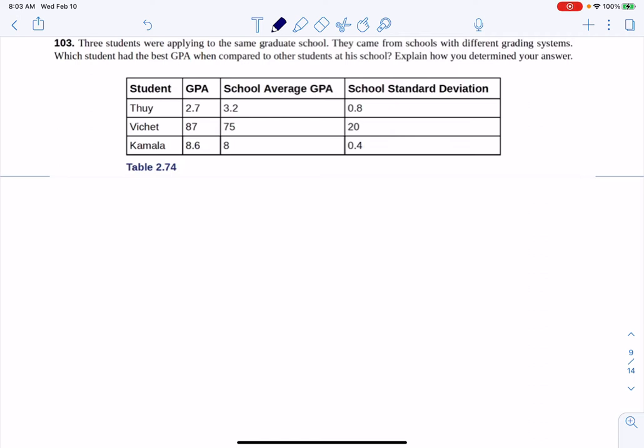So how you do this type of problem, you have these three students: we've got Thuy, we've got Vichay, and we've got Kamala. I love that this is Kamala, given what happened this year. We've got these three students that have three different grading systems, so that means they're on different scales, right?